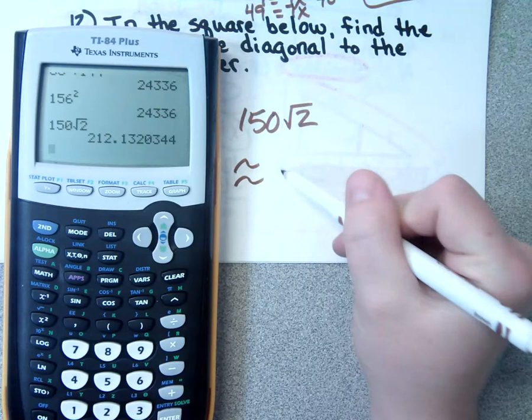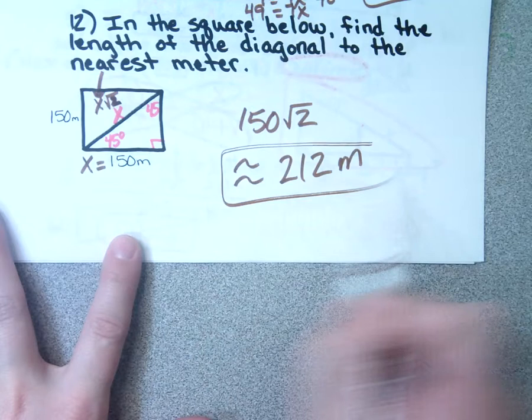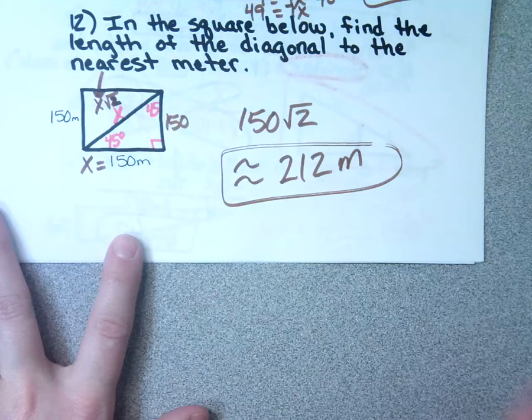You could have done this with Pythagorean theorem too: 150² + 150² = X². That would have been fine as well. It's just because it's a square, I know that makes a 45-45-90.